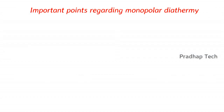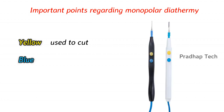There are two buttons in monopolar diathermy. One is yellow, used to cut, and has a low voltage continuous current. The other is blue, used for coagulation, and has a high voltage alternating current.